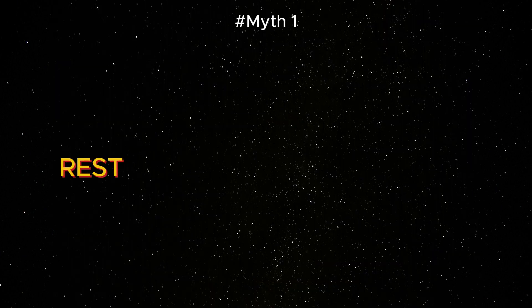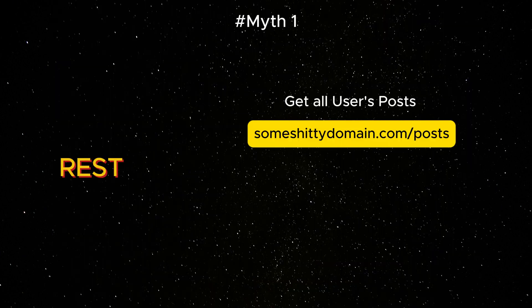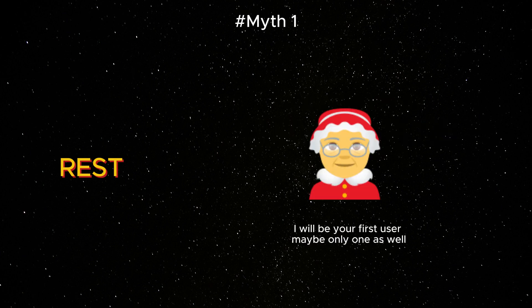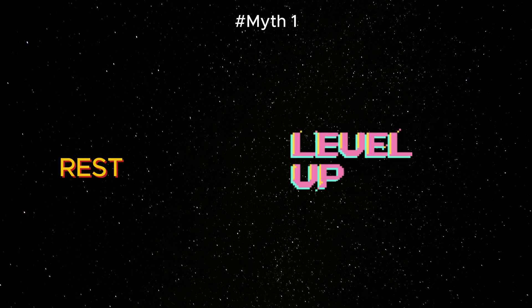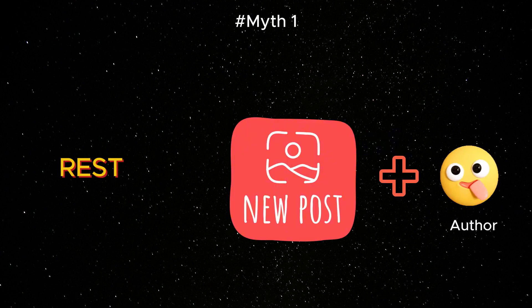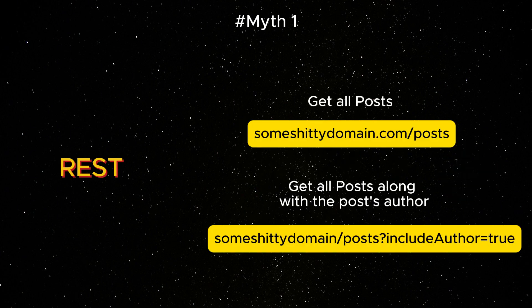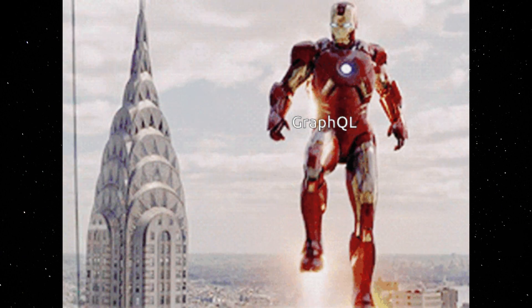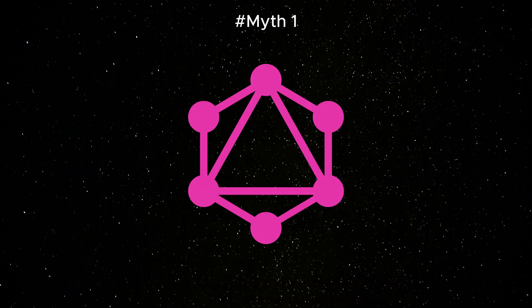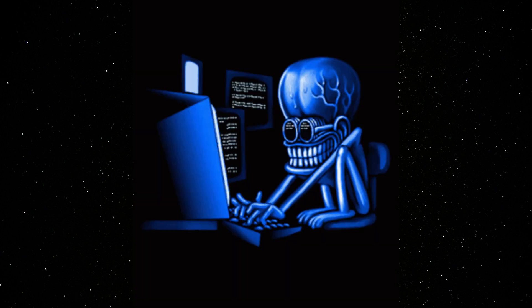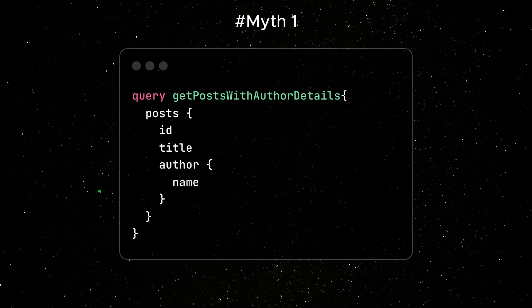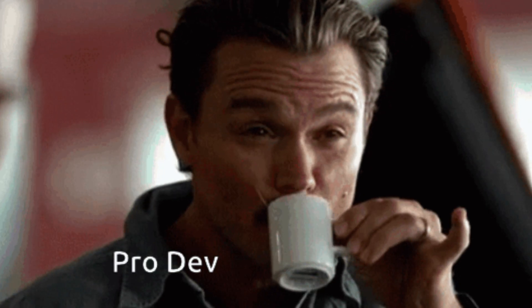Let's say you're building a simple blog or e-commerce site. You set up a REST API to fetch a list of posts — boom, done. But then you decide to level up the blog by showing author info alongside each post. Now you need to either tweak your REST API or add a whole new endpoint. Here's where GraphQL steps in like the superhero REST never asked for. With GraphQL, no backend changes are needed — just add one more field to your client-side query, and your new feature is live. Effortless.